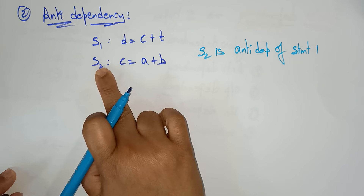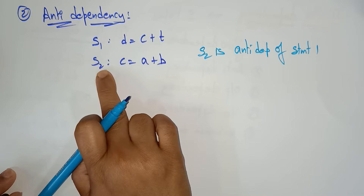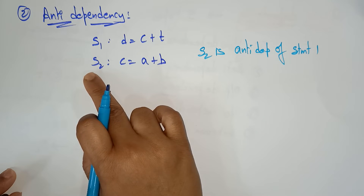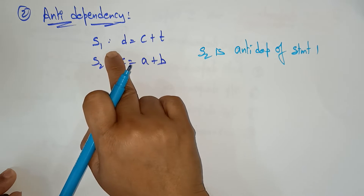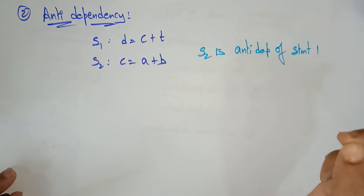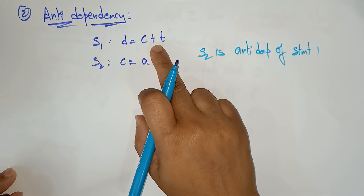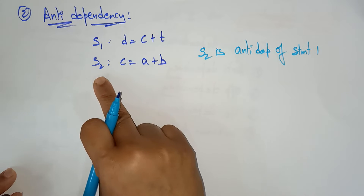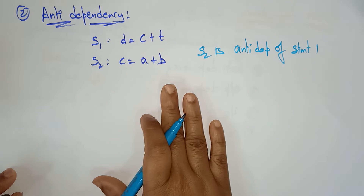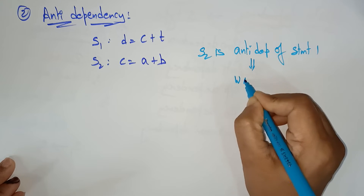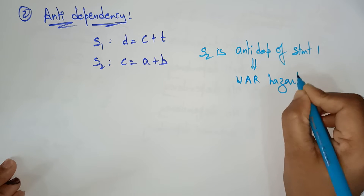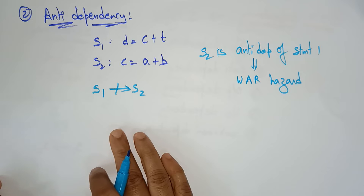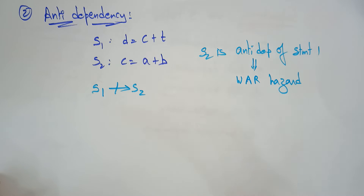If S2 follows S1 in program order, and instruction S2 tries to write a register or memory location before instruction S1 reads it, the original order must be preserved to ensure S1 reads the correct value. Anti-dependency is also called a WAR hazard — Write After Read hazard. S2 is anti-dependent on S1.